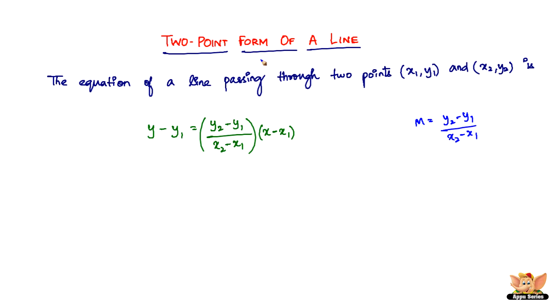When you've got two points through which a line is passing, the equation of that line can be found out by using this equation.